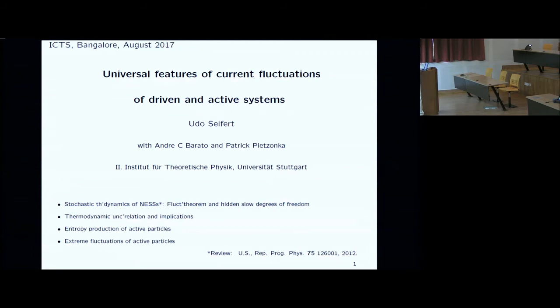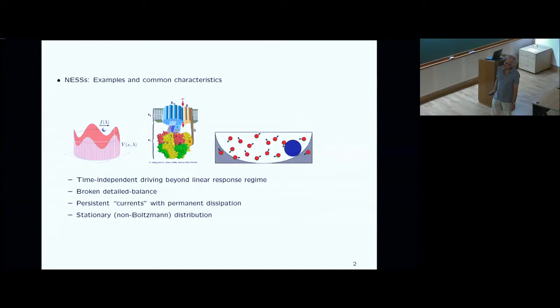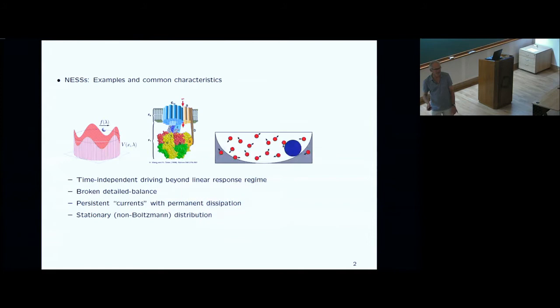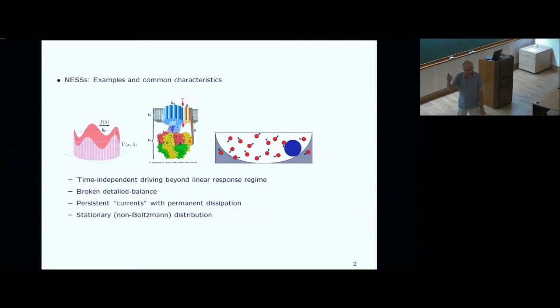We focus here on non-equilibrium steady states. One paradigm is a driven colloidal particle driven across a periodic potential. This one here is an enzyme, the F1 ATPase, which is our cells producing ATP, the fuel for all other biological processes. It can be constantly driven in the cell by proton gradients across the membrane.